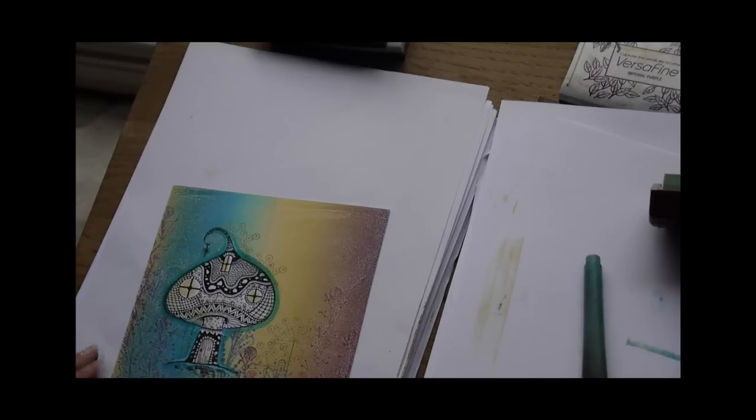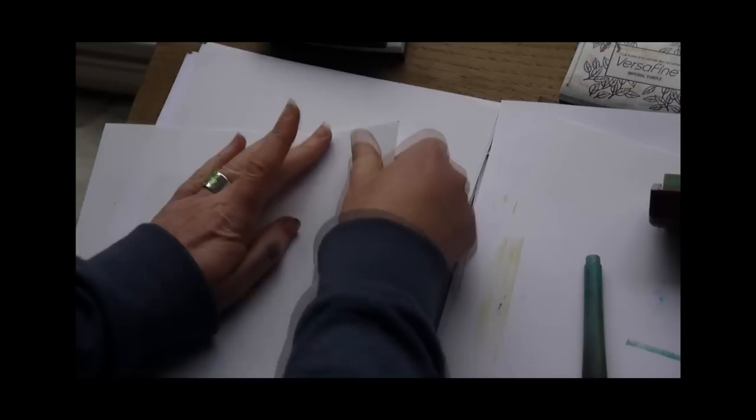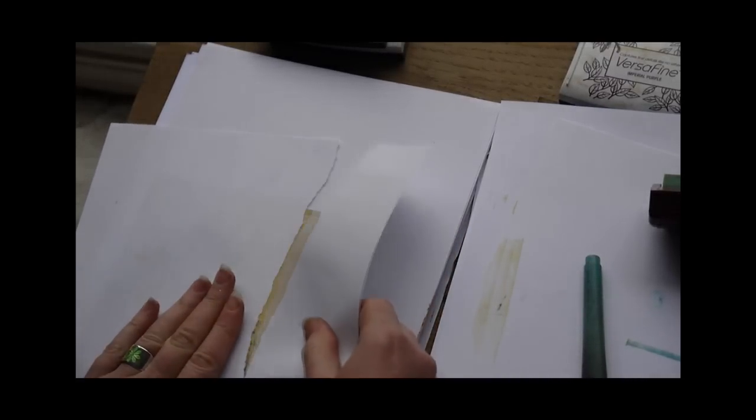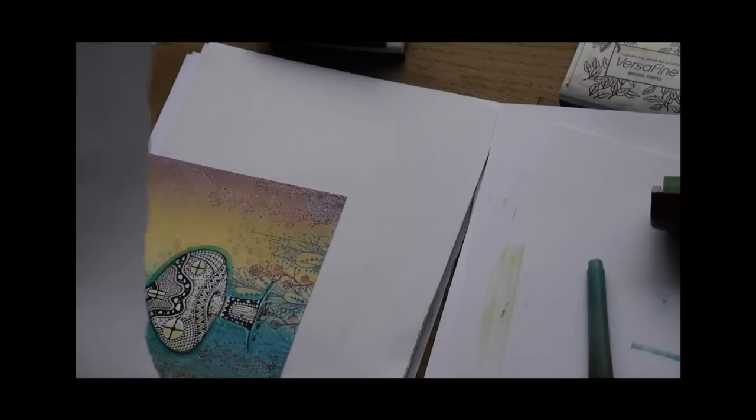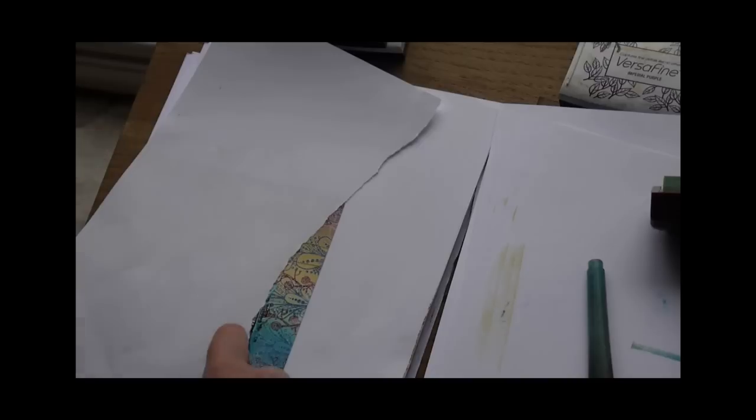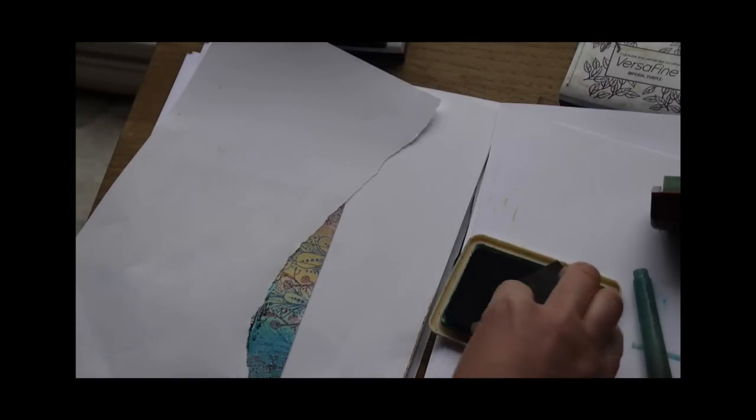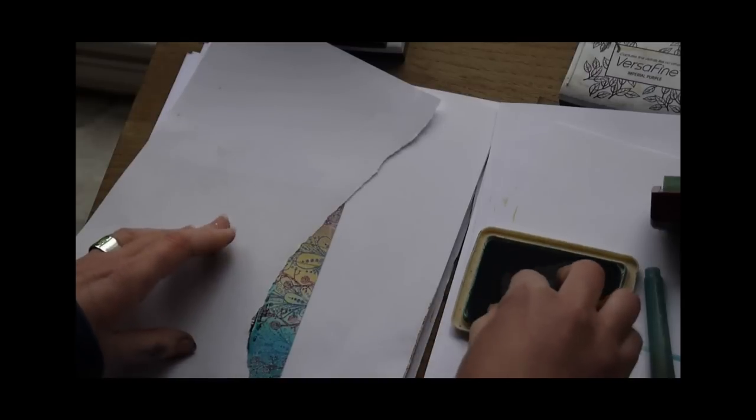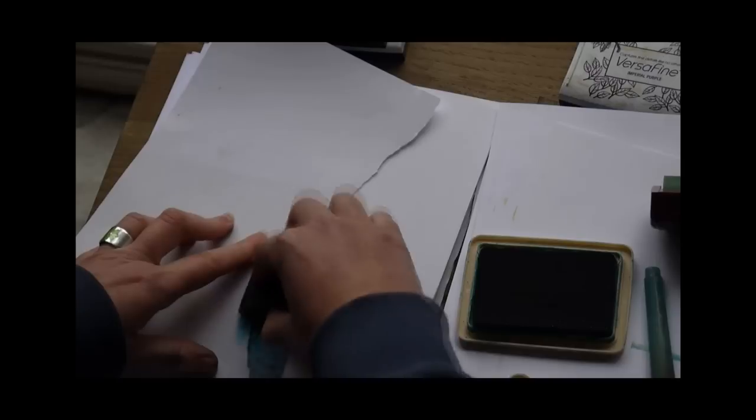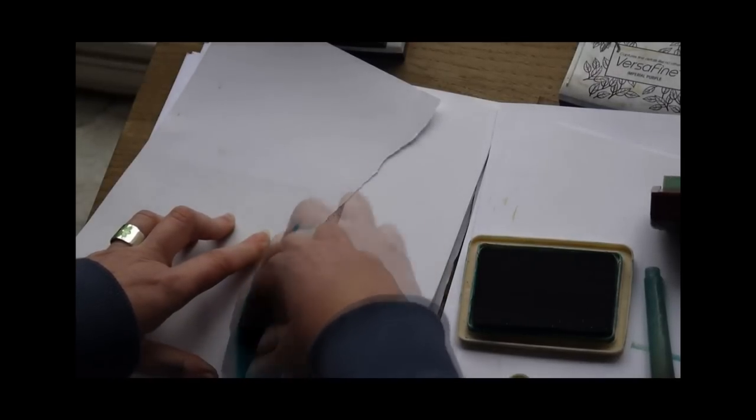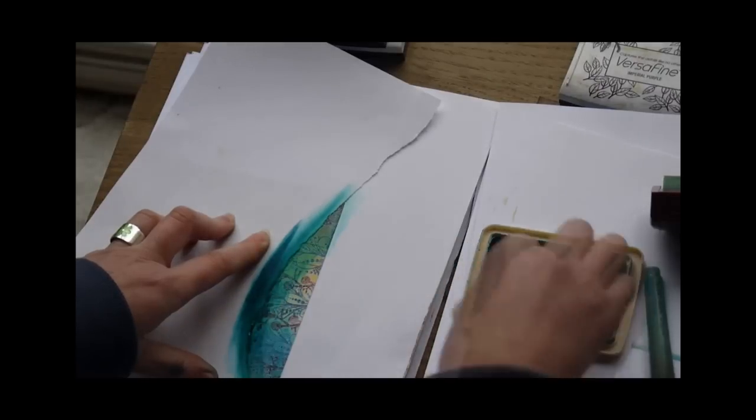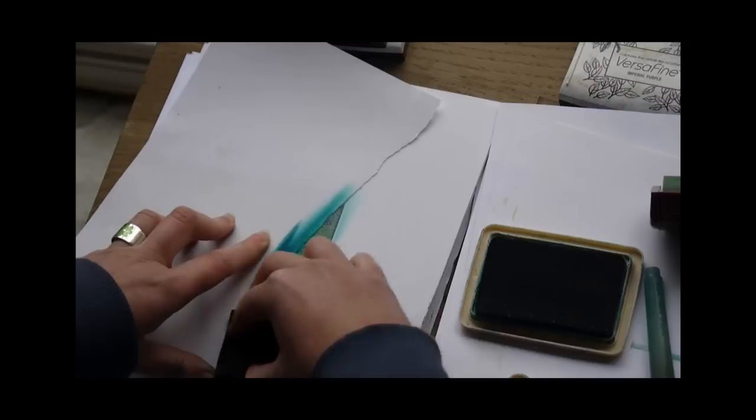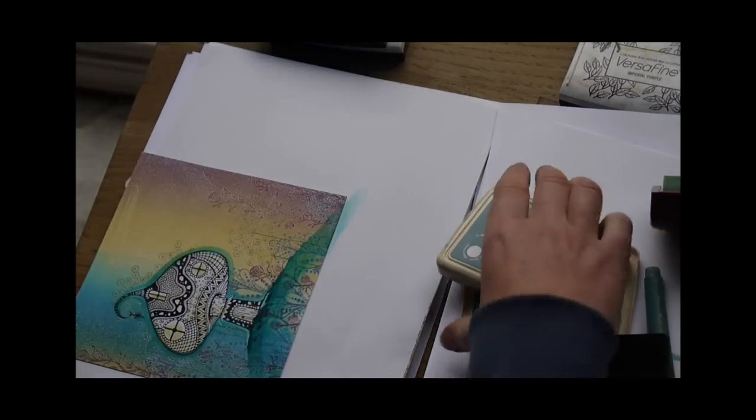Okay, so the Mushroom is floating slightly, so all we're going to do is tear some paper, create our mountain or our hill, line that up now, and then using our Cut and Dry and Stream, or whatever colour you would prefer. We're just going to take that over the edge. There we go. And that's grounded our Mushroom House now.